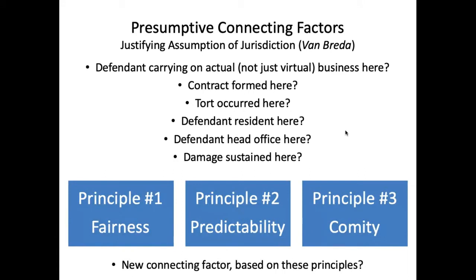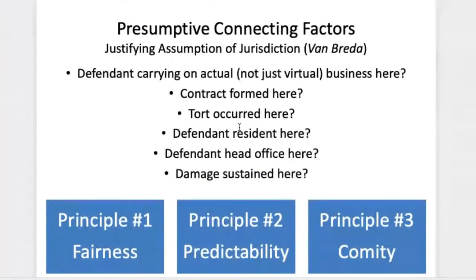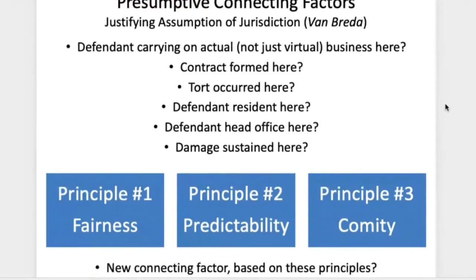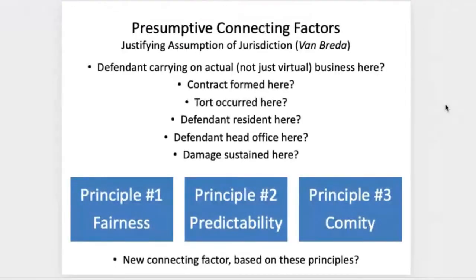For this part, the onus is on the plaintiff. The defendant, however, can then rebut the presumption — that's why these are called presumptive connecting factors. The defendant has a chance to say that despite the existence of a presumptive connecting factor, for practical reasons, the Ontario court should not assume jurisdiction. When we switch to this branch of the test, we're looking more at the practical stuff: where is the key witness? Is there solid evidence that Ontario would be unable to adjudicate this in an efficient way? So there's a chance for the defendant to rebut that presumption.